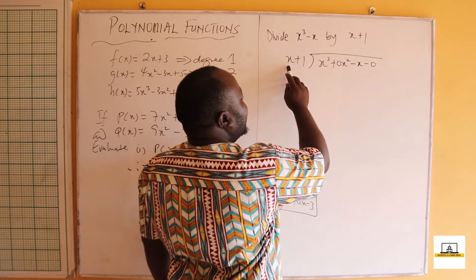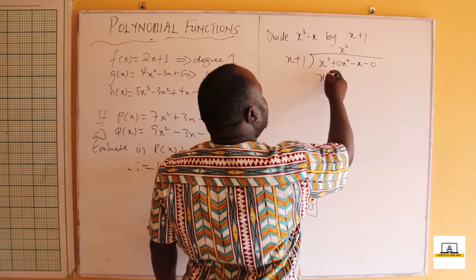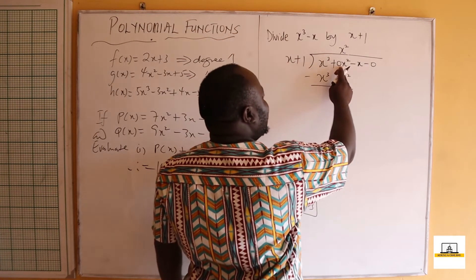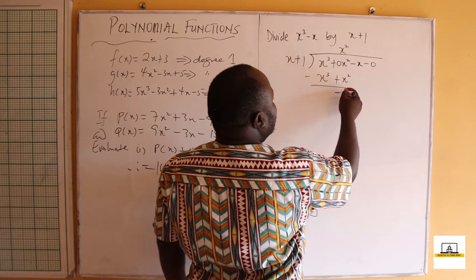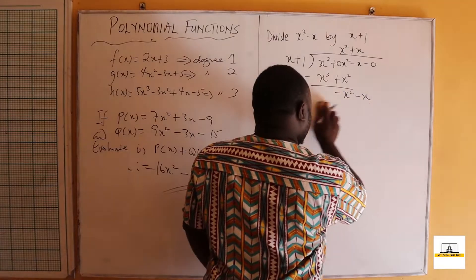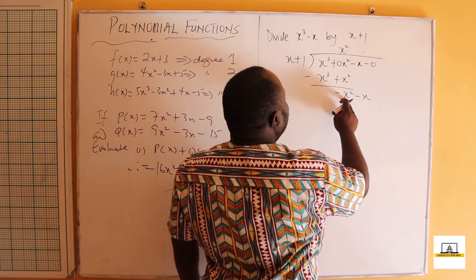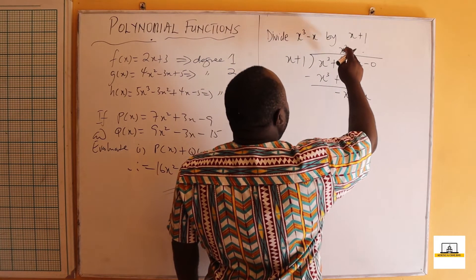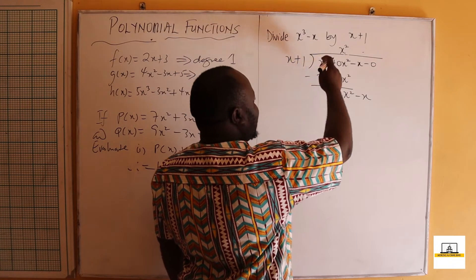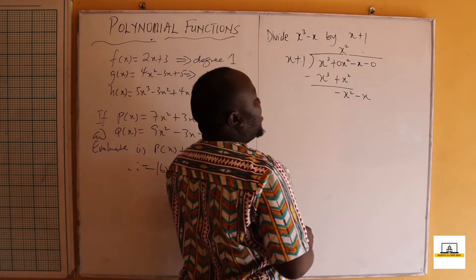We begin the division: x into x³ gives x², so we write x². Then x² times x = x³ and x² times 1 = x². We subtract: x³ - x³ = 0, and 0x² - x² = -x². Bring down -x. Now x into -x² gives -x, so we write -x. Then -x times x = -x² and -x times 1 = -x.